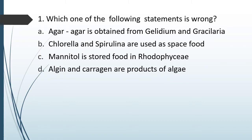Question No. 62: Which one of the following statements is wrong? Option A: Agar-agar is obtained from Gelidium and Gracilaria. Option B: Chlorella and Spirulina are used as space food. Option C: Mannitol is stored food in Rhodophyceae. Option D: Algin and Carrageen are products of algae.